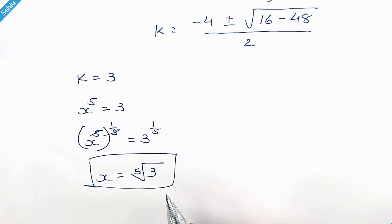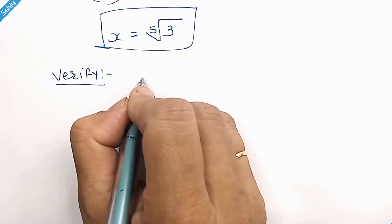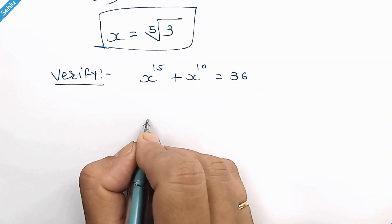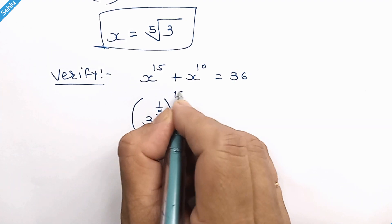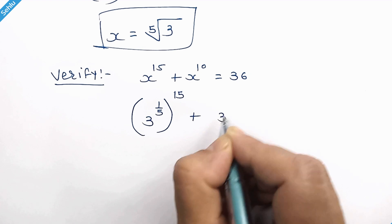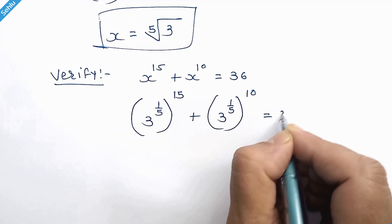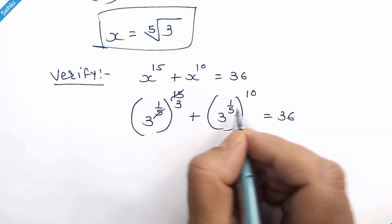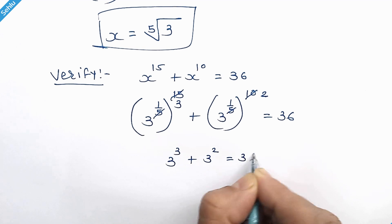Let's verify this. So we can write 3 to the power 1 over 5 whole to the power 15 plus 3 to the power 1 over 5 whole to the power 10 is equal to 36. This can multiply, so here we have 3 and here we have 2. So 3 cube plus 3 square is equal to 36.